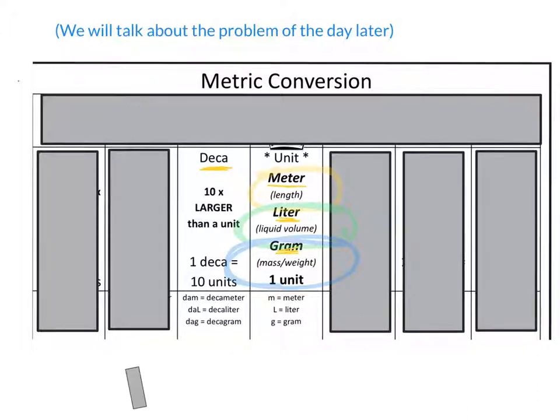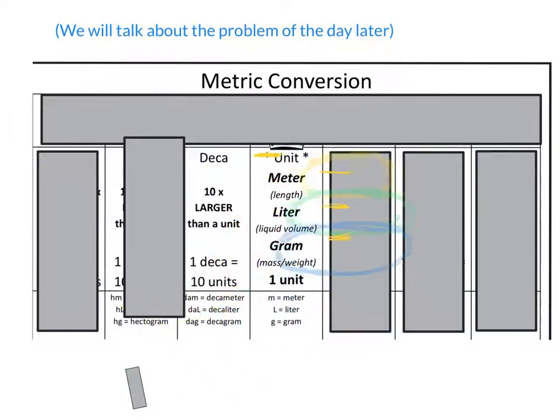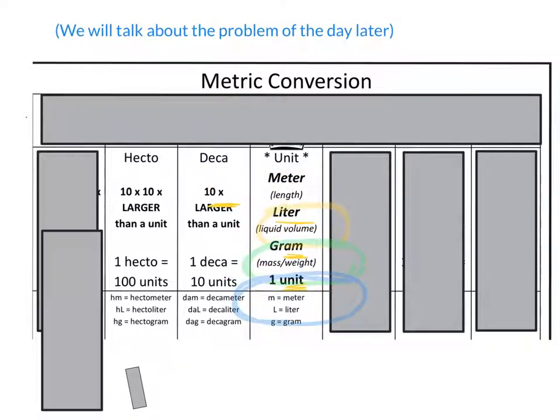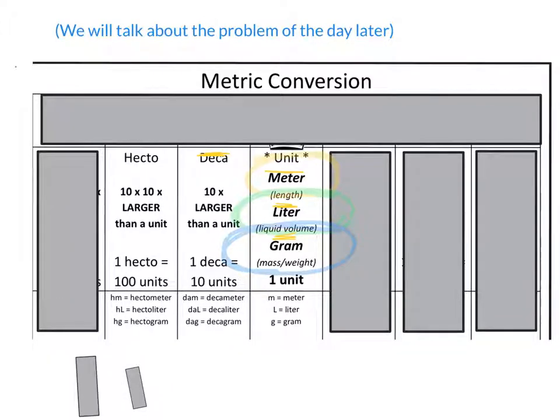Now if something is 10 times bigger than a decameter or decaliter or decagram, there's a different prefix we use. We call it a hectometer or hectoliter or hectogram. So a hecto is how many times bigger than a deca? 10 times. A hecto is how many times bigger than a regular meter? 100 times. So we can see that each time as we're moving to the left, it's getting 10 times bigger.